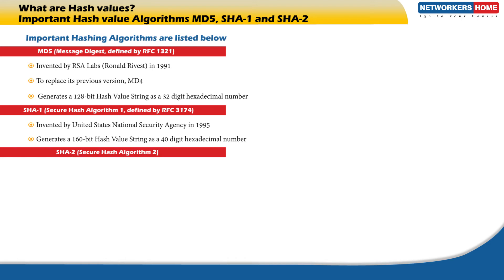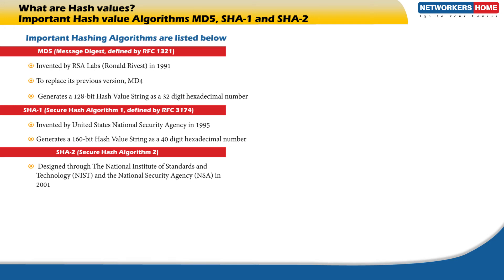SHA2, Secure Hash Algorithm 2, was designed through the National Institute of Standards and Technology and the National Security Agency in 2001. SHA2 is a family of two hash algorithms with different block sizes: one is called SHA256 and the other is called SHA512.